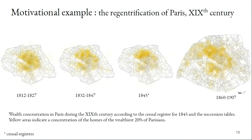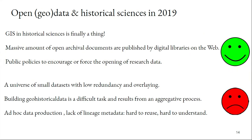So this is the re-gentrification of Paris, where the richest inhabitants were living in the very center of the city at the beginning of the 19th century, then moved slowly to the West during the century, and finally came back. There were new rich people in the city at the end of the century, due to the creation of new boulevards and new city squares in the center of Paris. And so in 2019, this kind of work is pretty common in historical sciences, because GIS in historical sciences is finally a thing, mainly due to the extensive use of QGIS in academics.